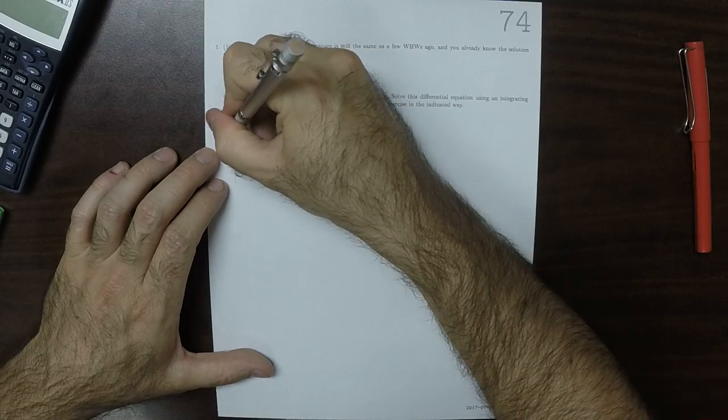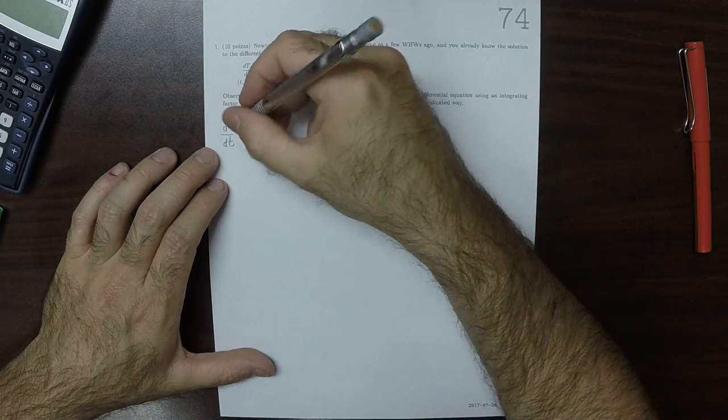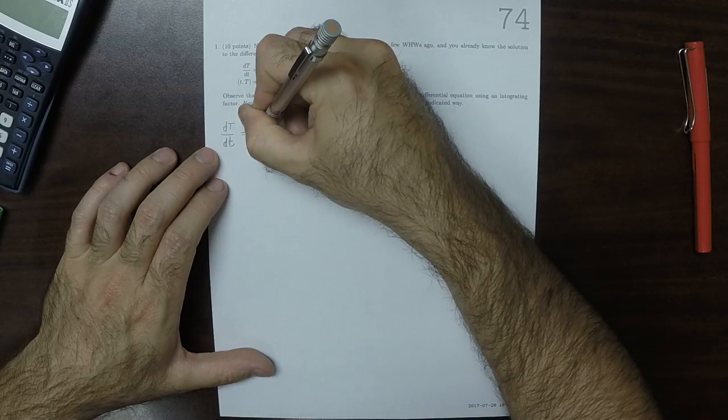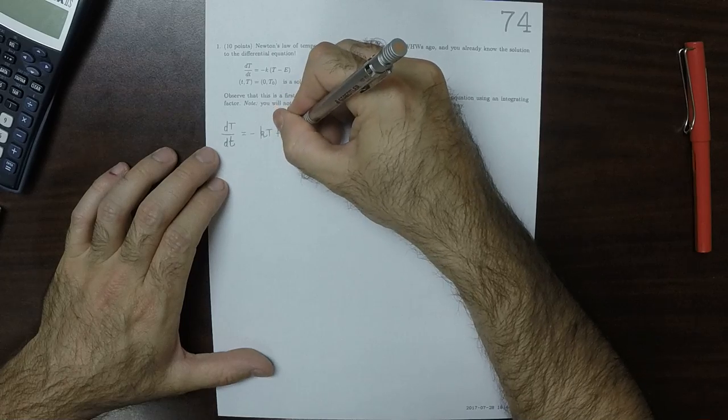D big T, D little t is equal to negative kT plus ke.